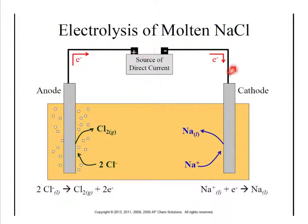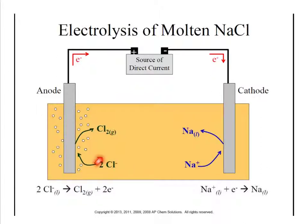The electrons that the anode takes are going to flow over to the other side, where they join with the sodium to make liquid sodium — pure sodium. This is a non-spontaneous reaction. If you were to mix Na and Cl, or sodium and chlorine, you would get salt — it would react backwards to this, with sodium giving an electron to chlorine.